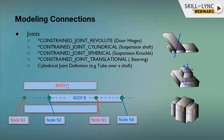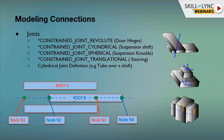Joints are a little tricky and complicated. The revolute joint is used in door hinges, cylindrical joint in suspension shafts, spherical joint in suspension knuckles, and translational joint in steering. For a cylindrical joint — modeling a tube over a shaft — you select node 1 from body A, node 2 from body B, node 3 from body A, and node 4 from body B, and define the joint so it acts correctly when axial load is applied. The same approach applies for spherical and translational joint definitions.